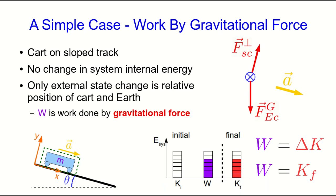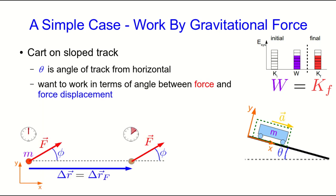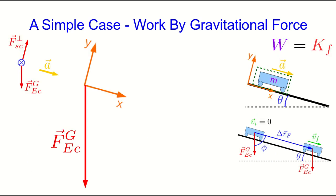Note that the gravitational force isn't parallel to the motion. Normally when we talk about things on slopes we refer to the angle of the slope from the horizontal, but that's not actually the angle we want here. We want to work in terms of the angle defined as the angle between the force and the force displacement vector — in particular, the angle between the gravitational force and the force displacement vector, which is the angle phi indicated in the diagram.